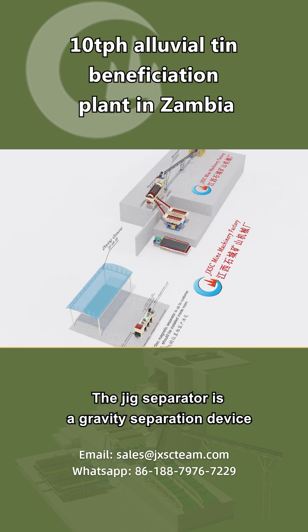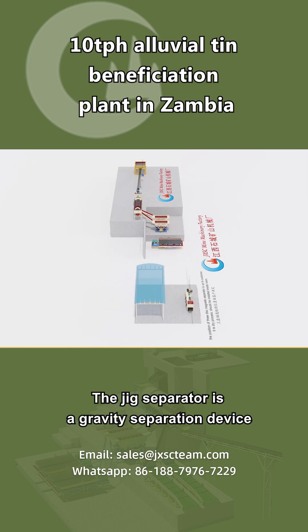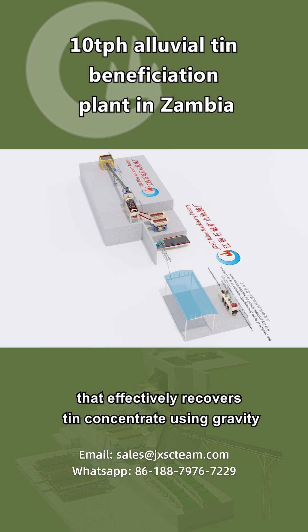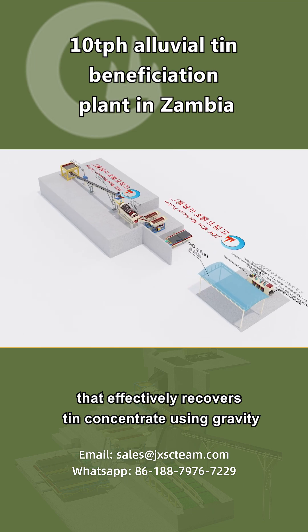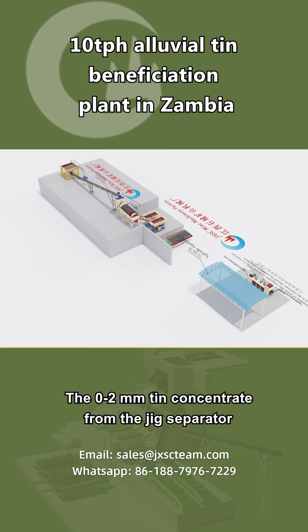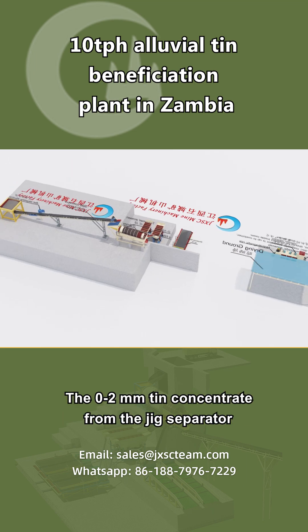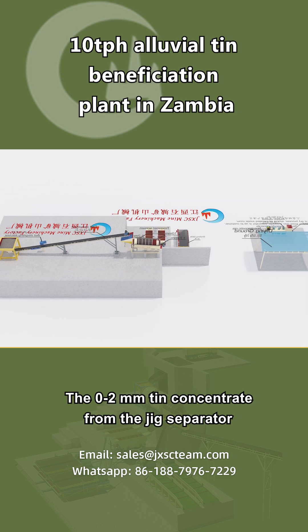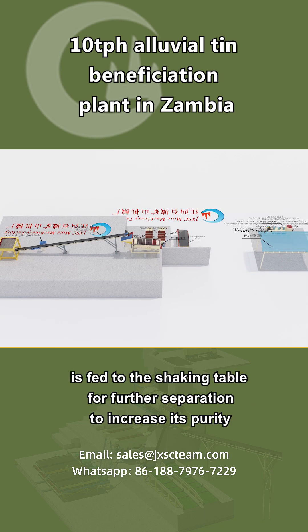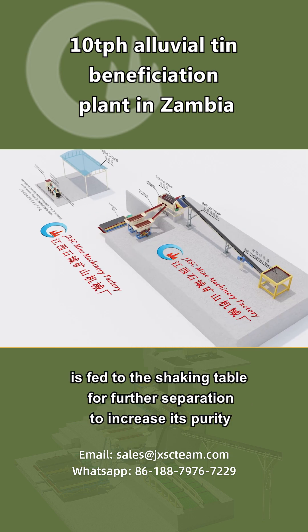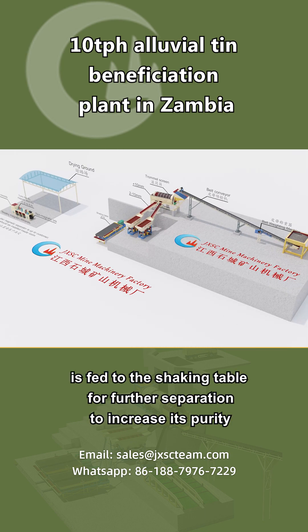The jig separator is a gravity separation device that effectively recovers tin concentrate using gravity. The 0 to 2 mm tin concentrate from the jig separator is fed to the shaking table for further separation to increase its purity.